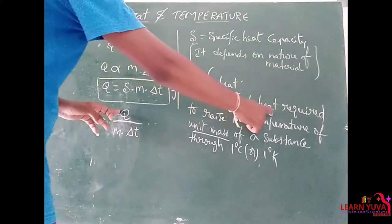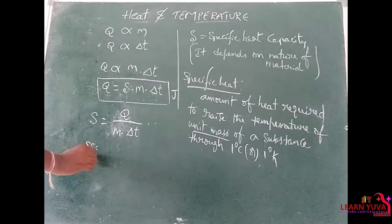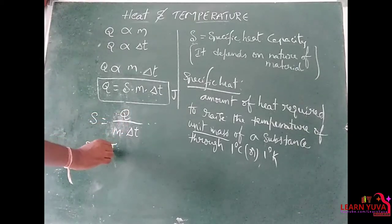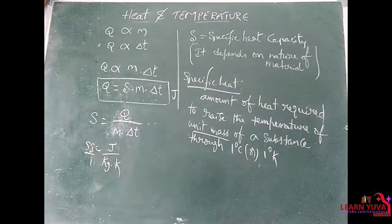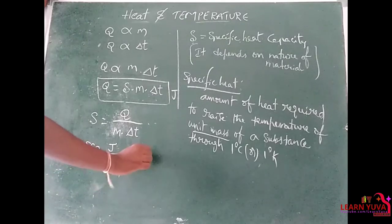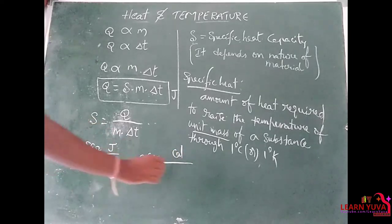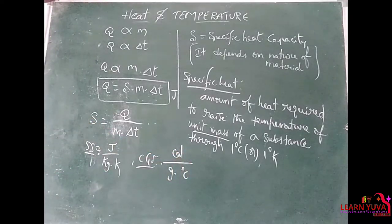Where Q is heat energy, m is mass, and delta T is change in temperature. Writing the SI units: Q in joules, mass in kilograms, temperature in Kelvin — so the unit of S is joule per kilogram per Kelvin. In CGS units, it is calories per gram per degree Celsius.